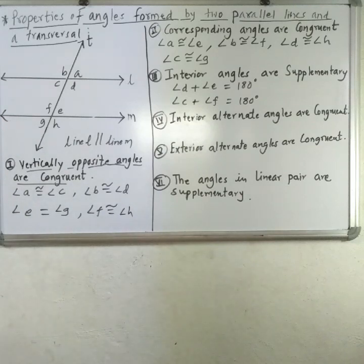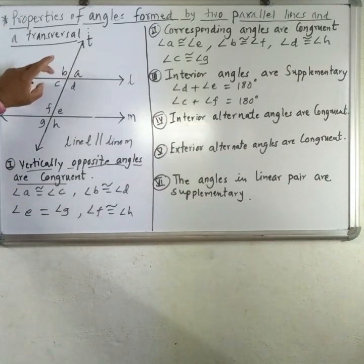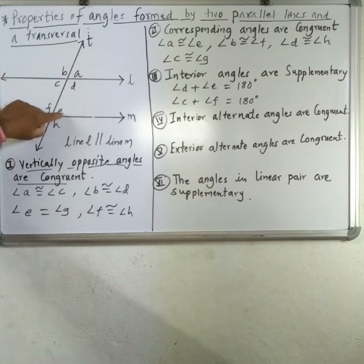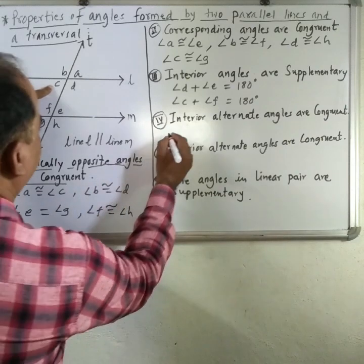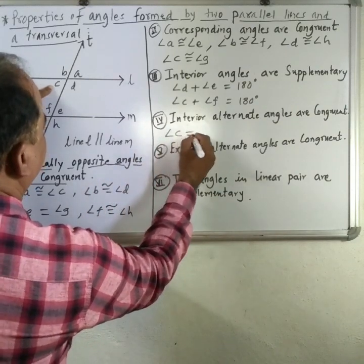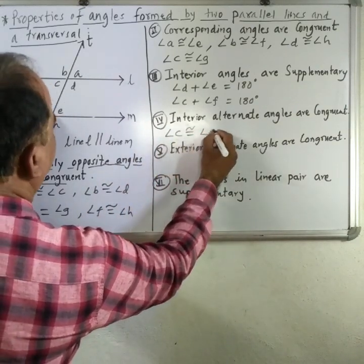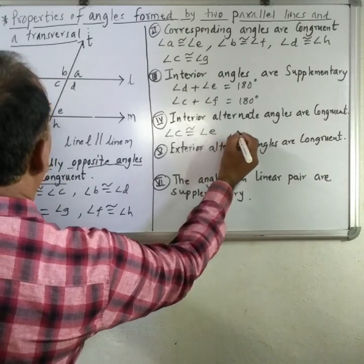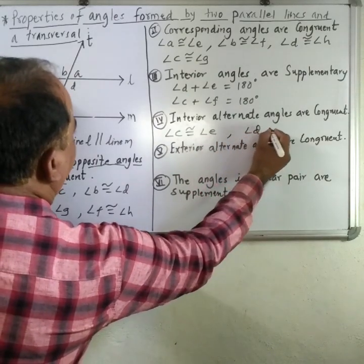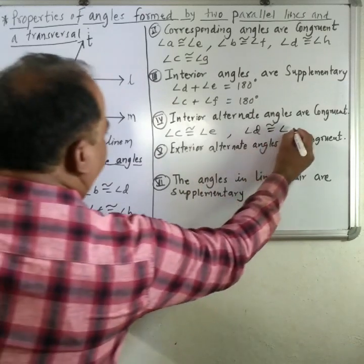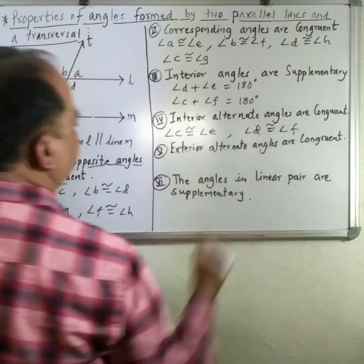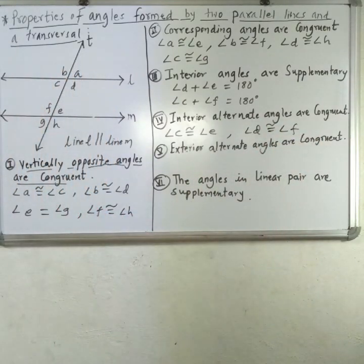Next is the fourth property: alternate interior angles are congruent. The first pair is angle C is congruent to angle E, and the second pair is angle D is congruent to angle F.